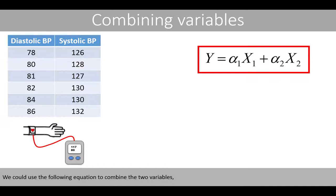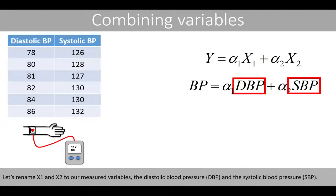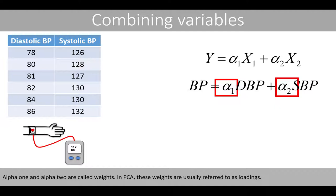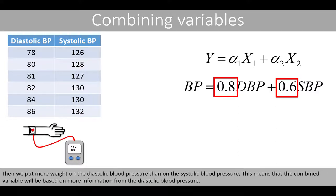We could use the following equation to combine the two variables, where x1 and x2 represent the two variables. Let's rename x1 and x2 to the diastolic blood pressure, DBP, and the systolic blood pressure, SBP. We call the combined variable blood pressure. Alpha1 and alpha2 are called weights — in PCA, these weights are usually referred to as loadings. For example, if we set alpha1 to 0.8 and alpha2 to 0.6, we put more weight on the diastolic blood pressure, so the combined variable will be based on more information from it.